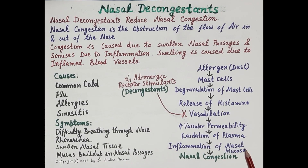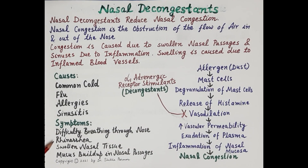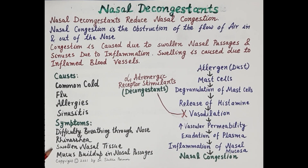So on one hand there is inflammation of nasal mucosa, and on the other hand there is excessive secretion of mucus, causing nasal obstruction — this process is termed nasal congestion. The common causes are the common cold, flu, allergies, and sinusitis. Symptoms include difficulty in breathing through the nose, rhinorrhea (running nose) due to leaky blood vessels, swollen nasal tissue, and buildup of mucus in the nasal passages.